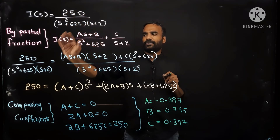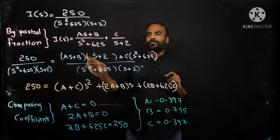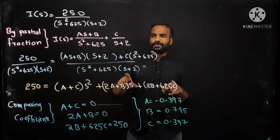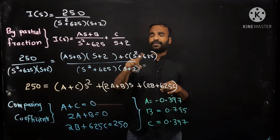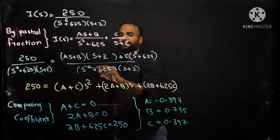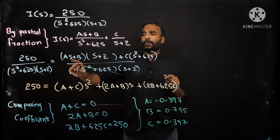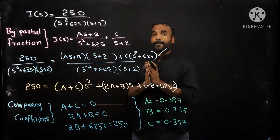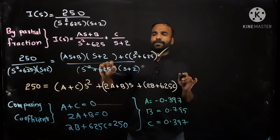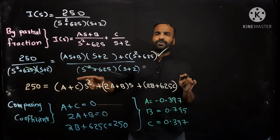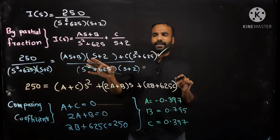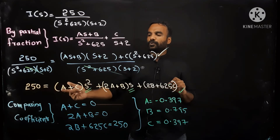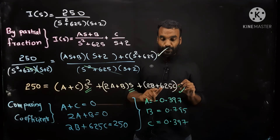Equating left and right sides, taking the LCM and cross-multiplying: 250 = (As + B)(s + 2) + C(s² + 625). Opening the bracket and arranging by coefficient of s²: (A + C); coefficient of s: (2A + B); constant: (2B + 625C). Equating coefficients: for s²: A + C = 0 (equation 1); for s: 2A + B = 0 (equation 2); constant: 2B + 625C = 250 (equation 3).